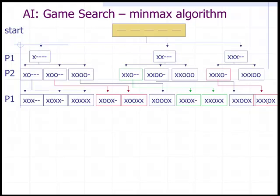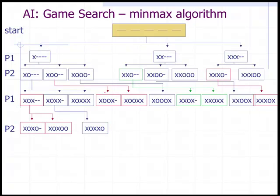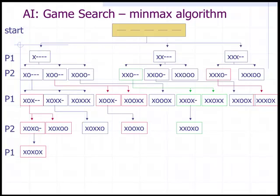We continue building out the tree until all game states are resolved. Player two's possibilities are mapped out level by level, including moves from each remaining unfinished game state, until finally the last move is made and we've written out the entire game space. In AI game search, the goal is to play the entire game inside the computer and then select the best moves.